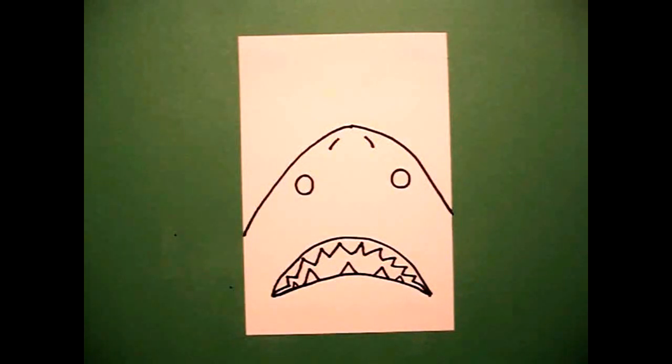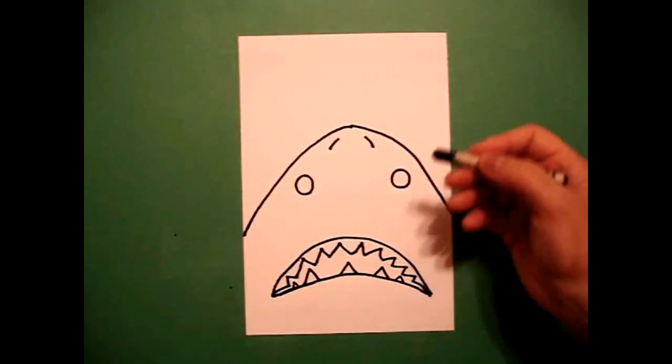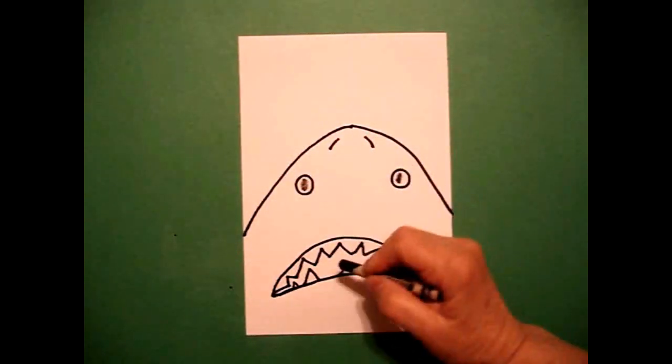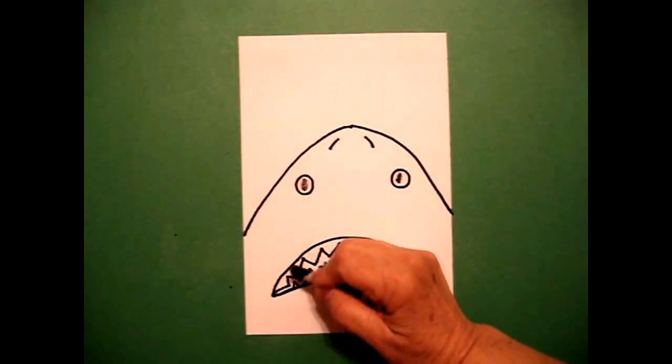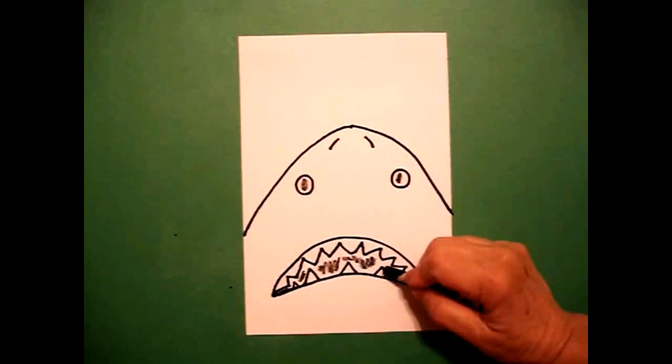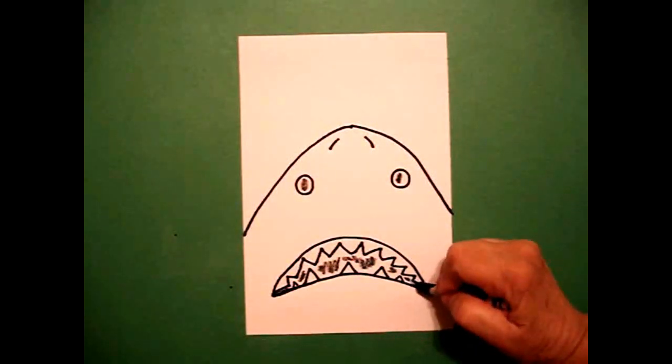Now I'm ready to color. This shark is pretty easy. You just need your black crayon to do your eyes and to do the inside section of your mouth. This is important because you want to make sure your teeth really show out.